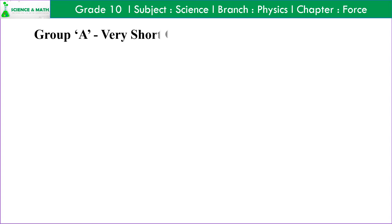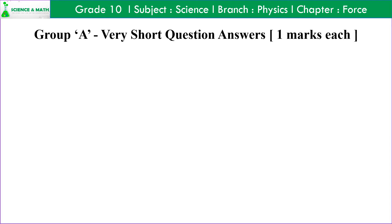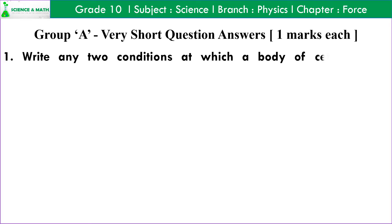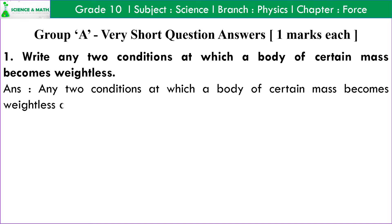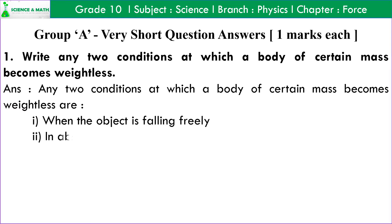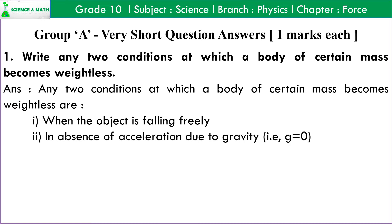Let us start with Group A very short question answers that are asked of one mark each. Q1: Write any two conditions at which a body of certain mass becomes weightless. Answer: 1. When the object is falling freely. 2. In absence of acceleration due to gravity, that is, g equals to 0.